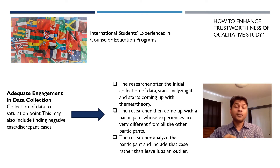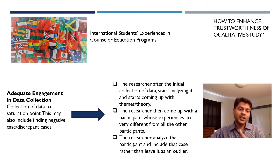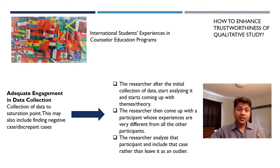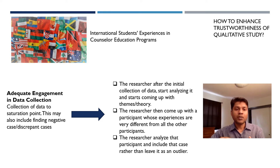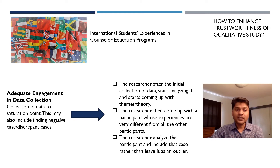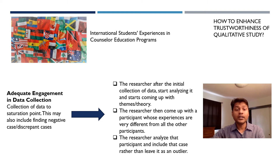But doing that will really weaken the trustworthiness of your study. Instead, even if 10 participants talk about similar things and you come up with themes from those experiences, the one participant whose experiences are completely different — you make sure to include them when you discuss those themes and write your manuscript. We call these negative cases. As a researcher, to ensure high trustworthiness, you must reach the saturation point and if there are any negative cases, you also make sure to include them in the research.